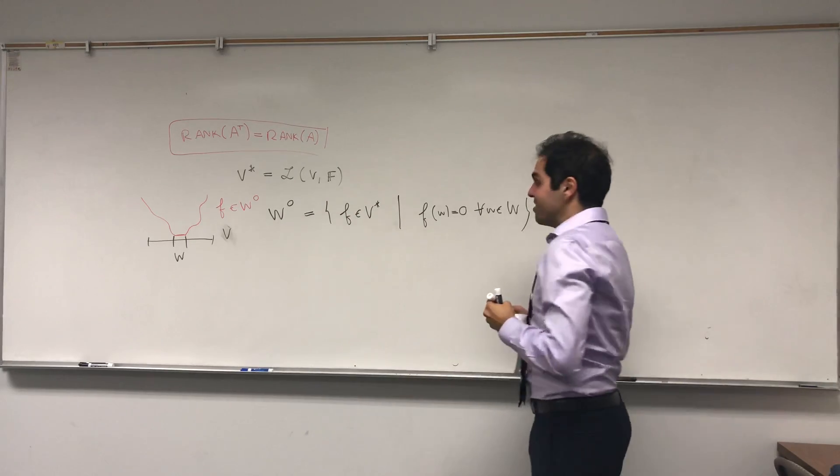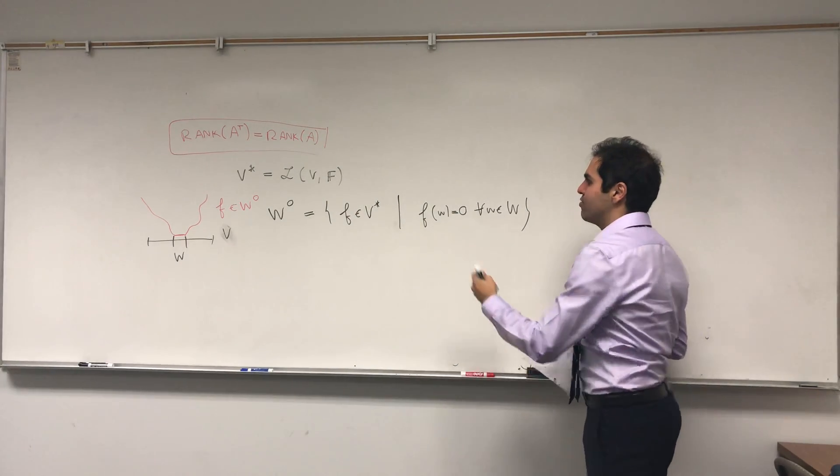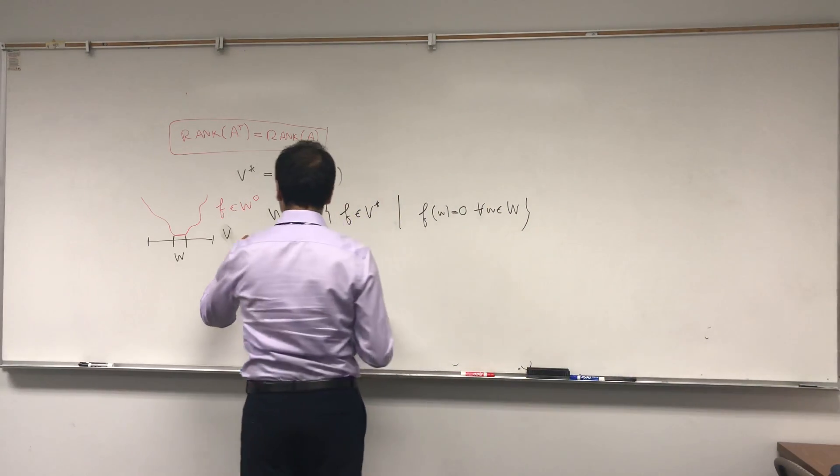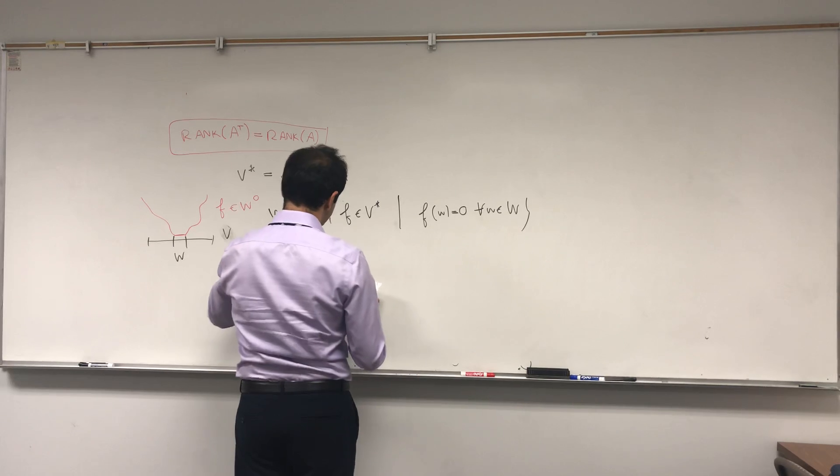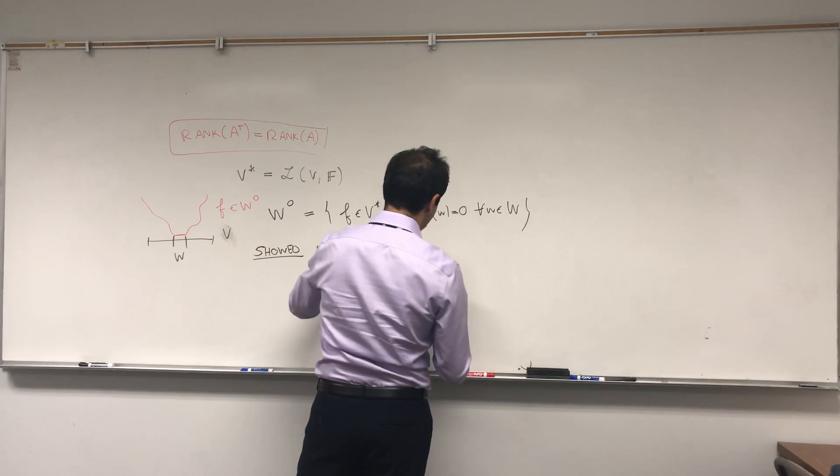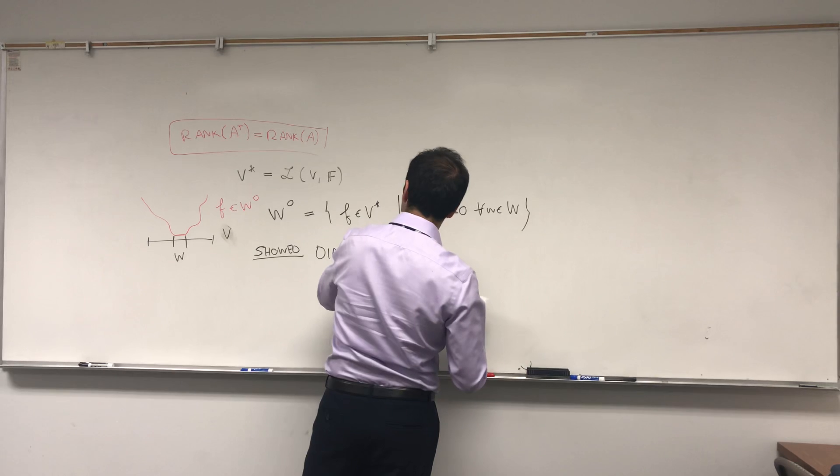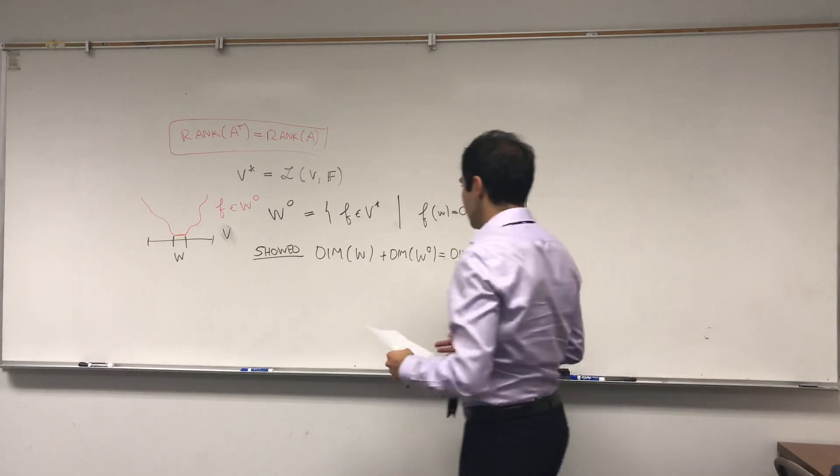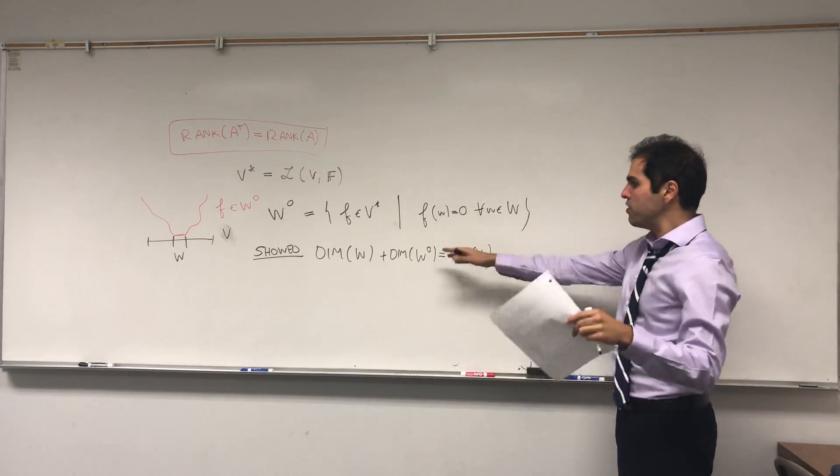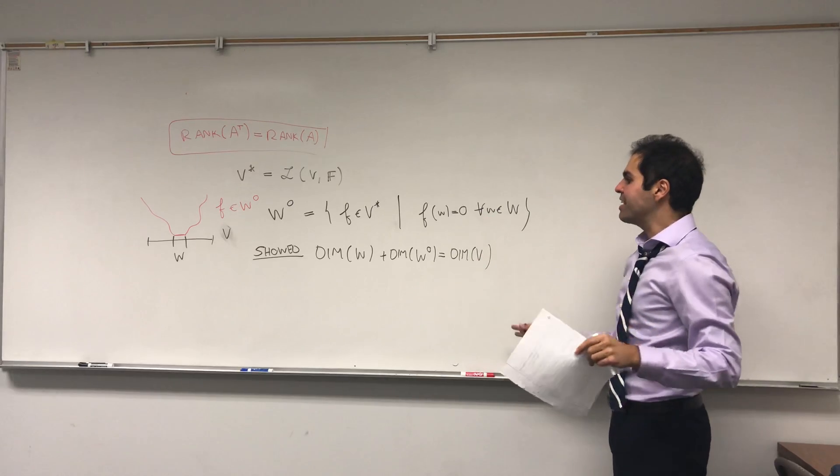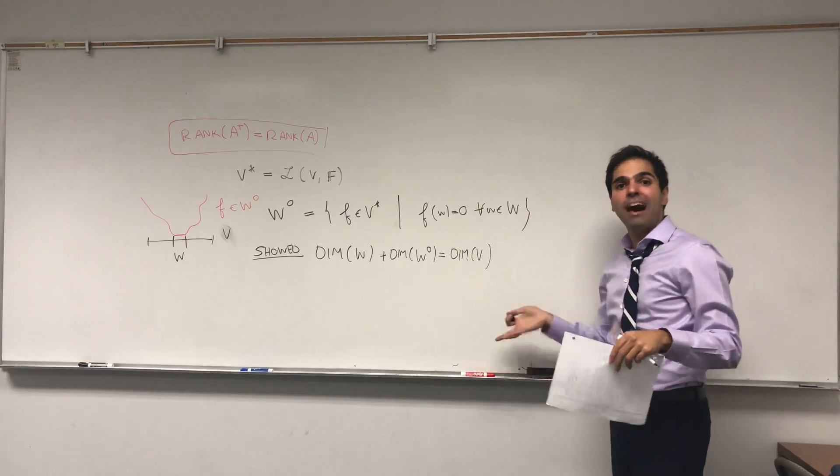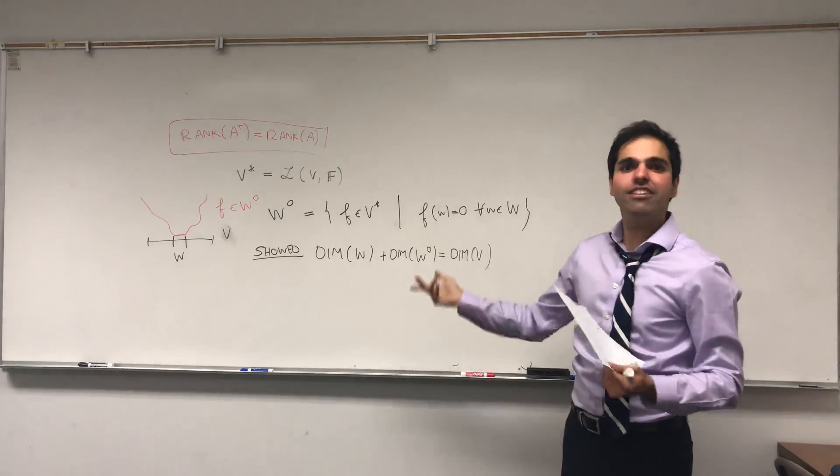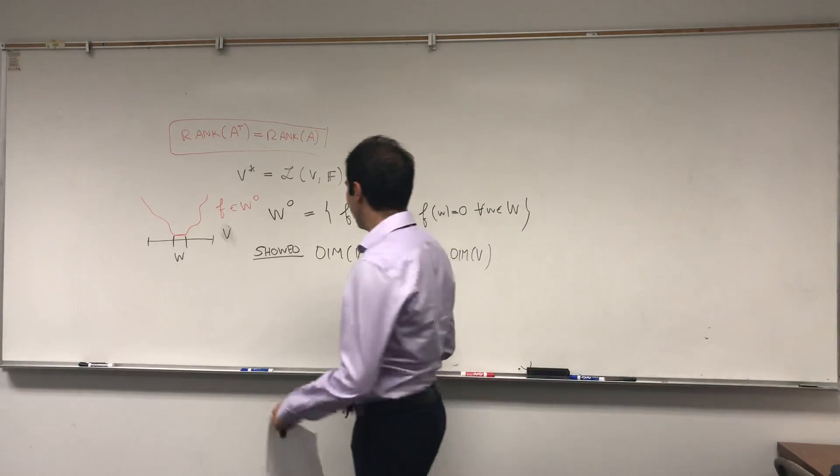And last time, I showed that this is indeed a subspace of V star. And moreover, I showed this very nice identity that the dimension of W plus the dimension of W naught equals to the dimension of V. So in other words, even though those things are two different spaces, their dimensions balance out, which should remind you a bit of the Rank-Nullity theorem. And in fact, the proof is very similar.